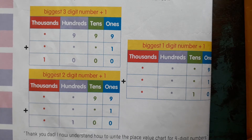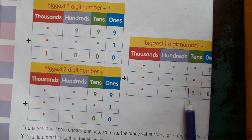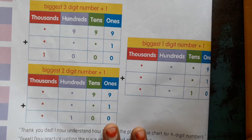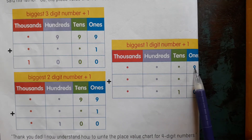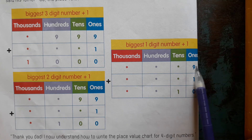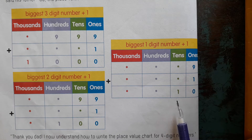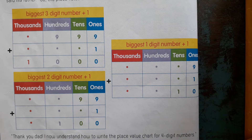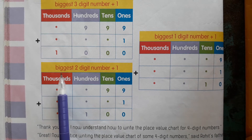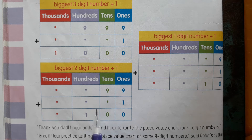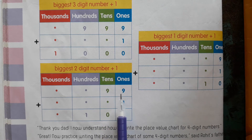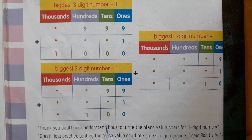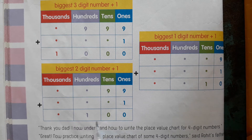Look into page number 18, children. Look at this table. Biggest 1-digit number plus 1. What is the biggest 1-digit number? 9. If you add 1 to 9, we get 10. So 10 is a 2-digit number — the smallest 2-digit number. And next, biggest 2-digit number plus 1. What is the biggest 2-digit number? 99. 99 plus 1 equals 100. This is a 3-digit number.